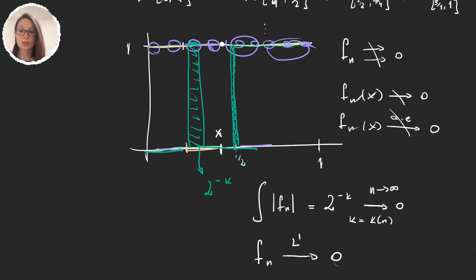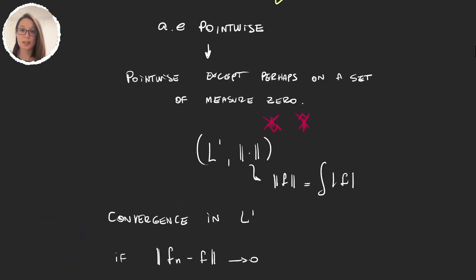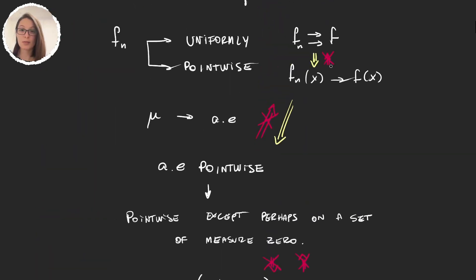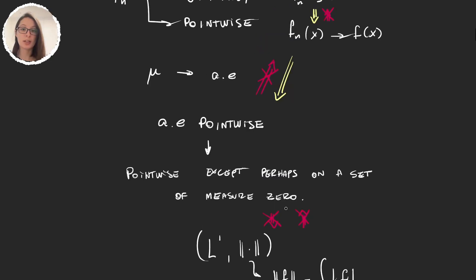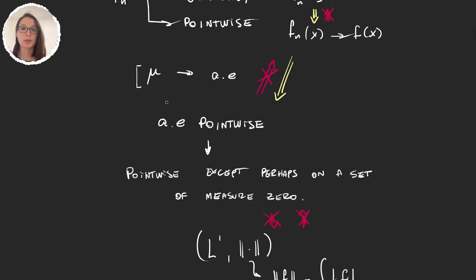This shows that L1 convergence does not imply uniform, pointwise, or almost everywhere convergence — confirming that L1 is separated from the other modes. We have the implications uniform → pointwise → almost everywhere, but L1 convergence is disconnected from all of these. There is more to say about convergence — for example, what happens with subsequences — and we will introduce additional modes beyond almost everywhere in the next few videos.